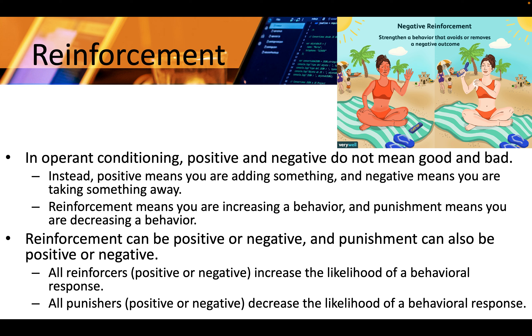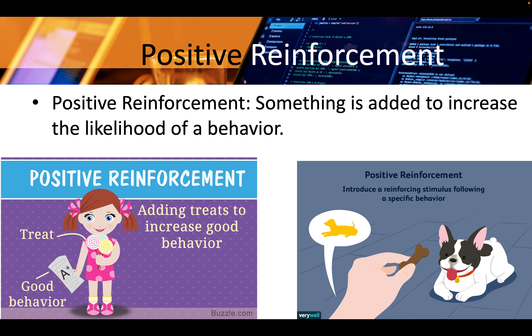Negative reinforcement strengthens a behavior that avoids or removes something negative. Positive reinforcement: something is added to increase the likelihood of a behavior — for example, a good grade, or a dog gets a treat. Negative reinforcement: something is removed to increase the likelihood of a behavior — for example, 'You can't play until you clean your room.'